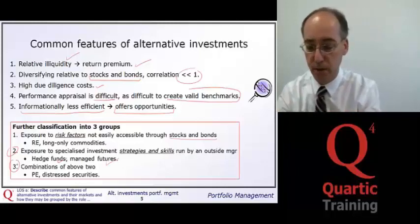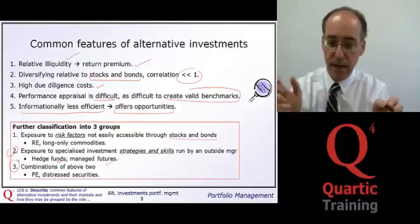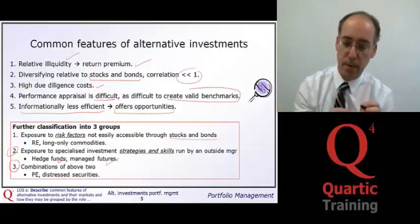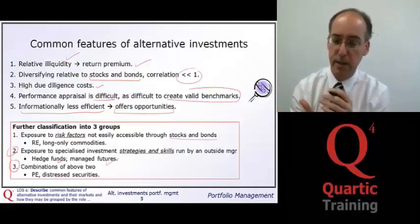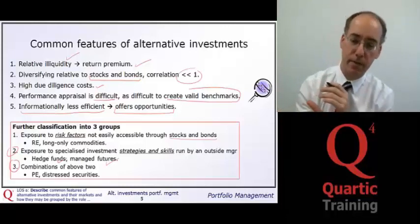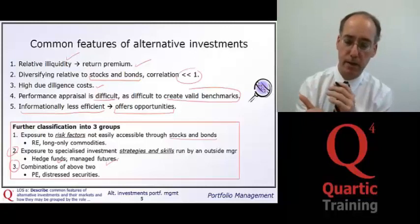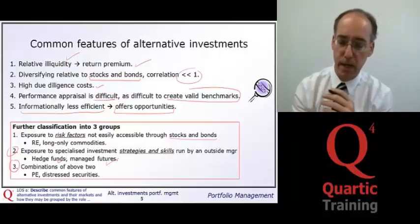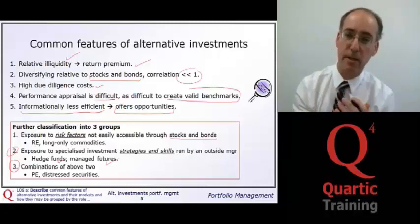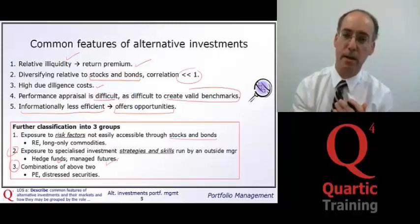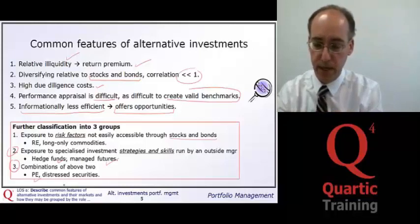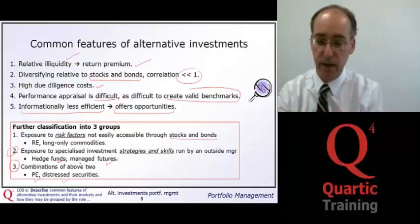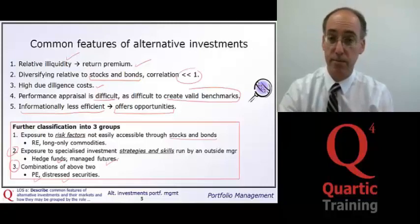The third group is a combination where both significant particular risk factors — different from those in stocks and bonds — and strategies and skills are essential to success. This might be the case with private equity and distressed securities.